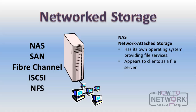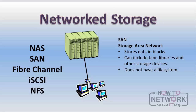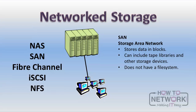Sometimes it's called a network appliance. In a larger company, they may choose to have a SAN or storage attached network. Unlike NAS, a SAN does not have a file system. The SAN typically stores data in blocks and is carved into logical disks called LUNs or logical unit numbers. To the client, the LUN looks like hard disk space and can be formatted with a variety of file systems.